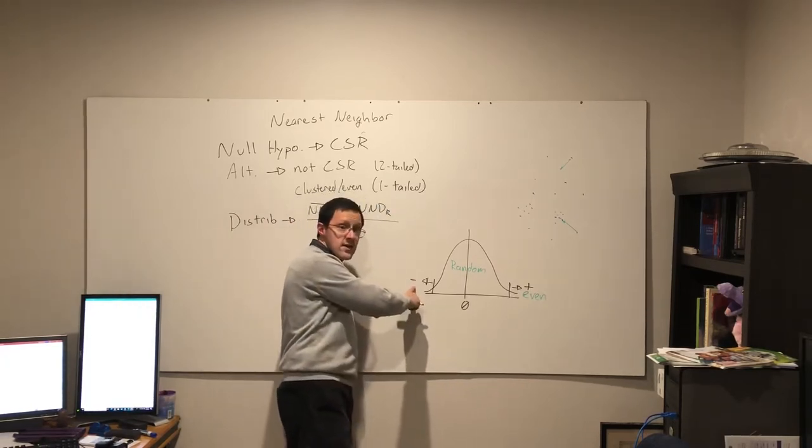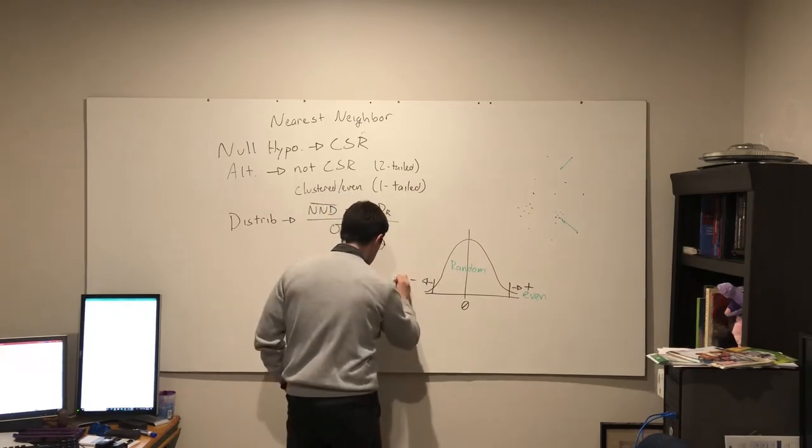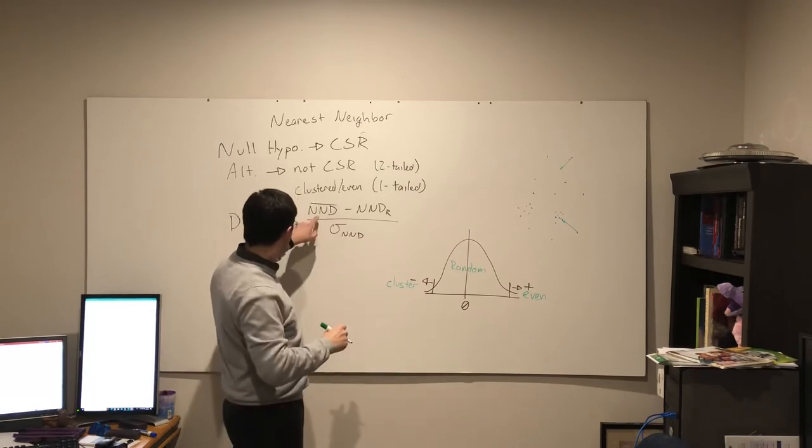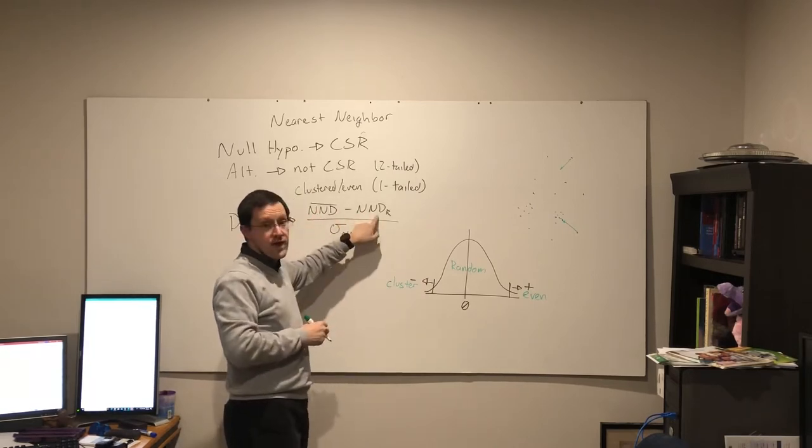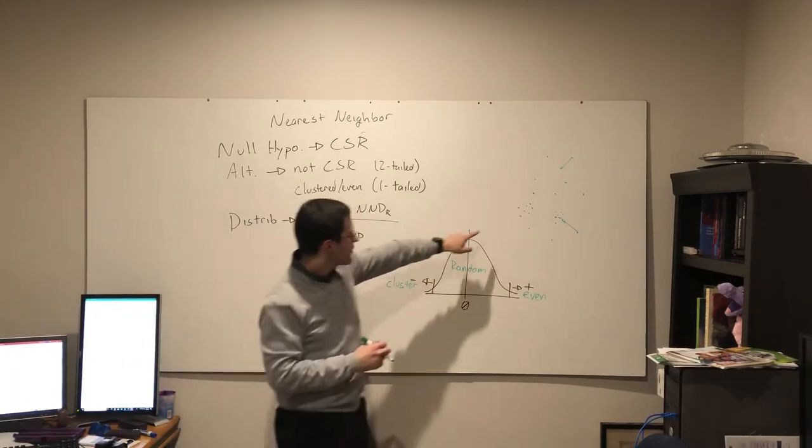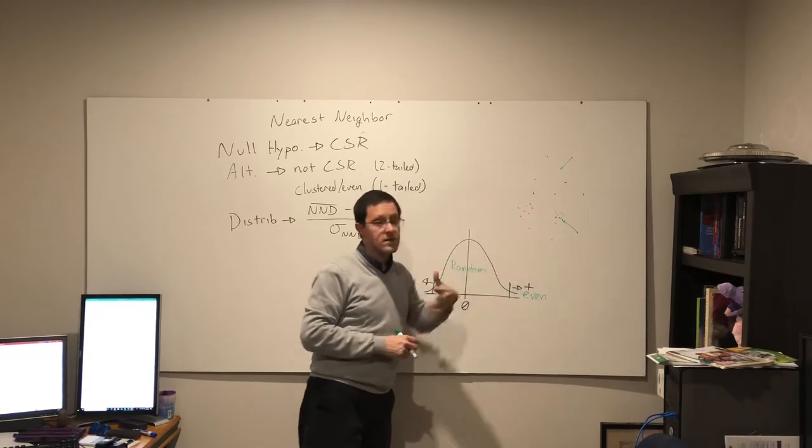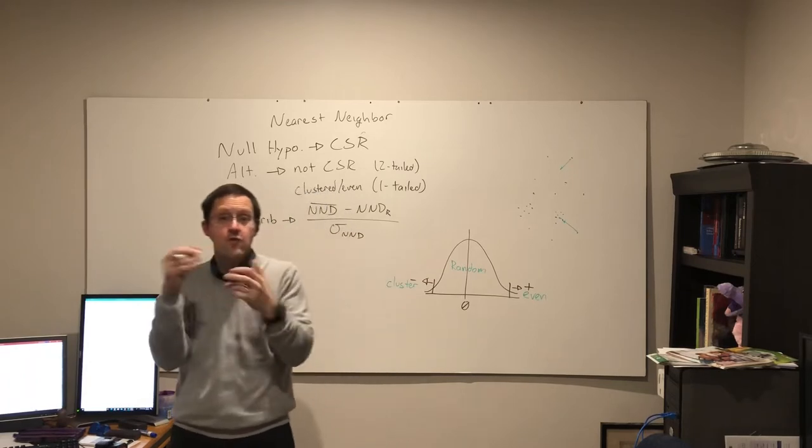On the flip side, if it's negative, the process of elimination already tells you it's clustered. That would mean this distance is less than random. The points are too close together then if they were random. That would probably be what happens here because of these two clusters here.